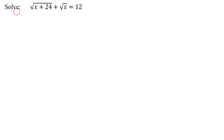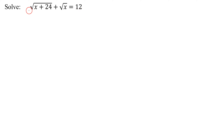In this example, we need to solve the equation the square root of x plus 24 plus the square root of x equals 12. I have one square root here, and I also have another square root. So this is a radical equation containing two square roots.